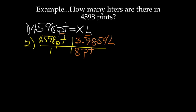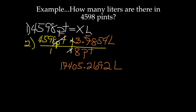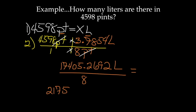Now multiply across the top and across the bottom. The pints cancel out. I get 17,405.2692 liters over 1 times 8, which is 8. When dividing, the top number goes in the calculator first, and I end up with 2,175.65865 liters.